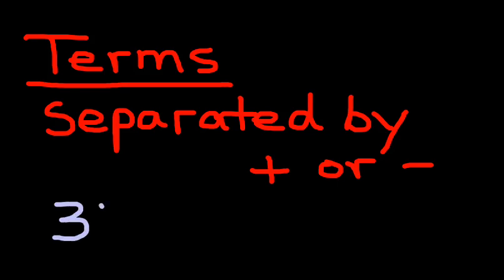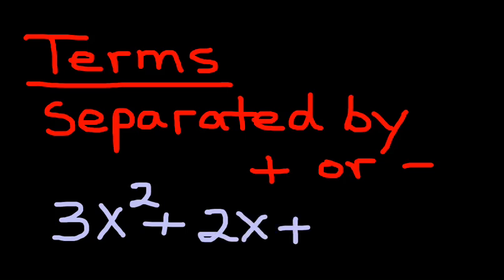For example, if I write 3x squared plus 2x plus 5, the terms are 3x squared, 2x, and 5. Each of those are separate terms. This polynomial has three terms. They're separated by plus signs in this case. We could have also separated them with minus signs. They would have been terms just the same.